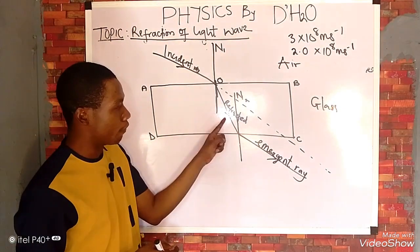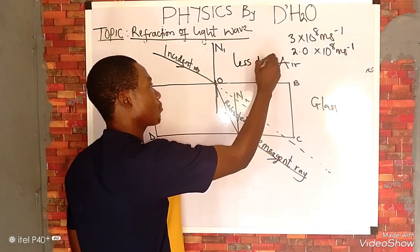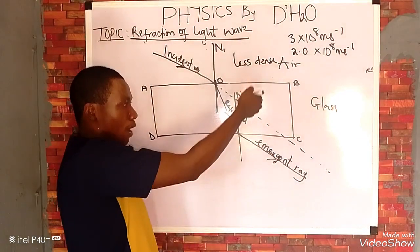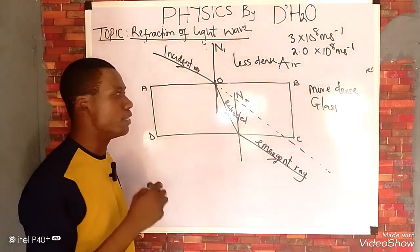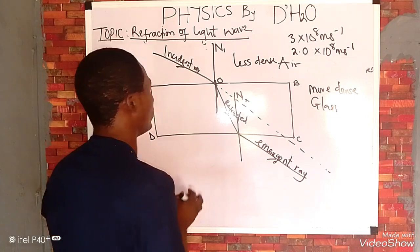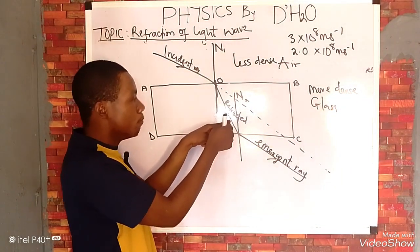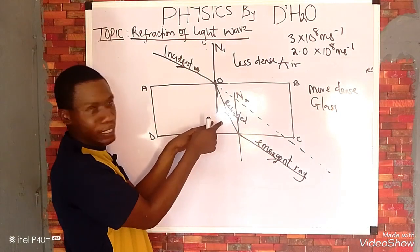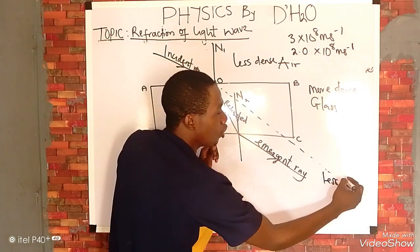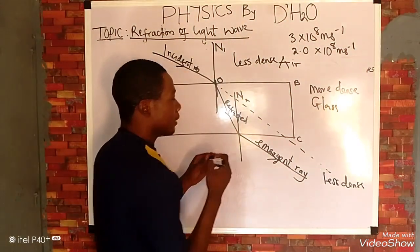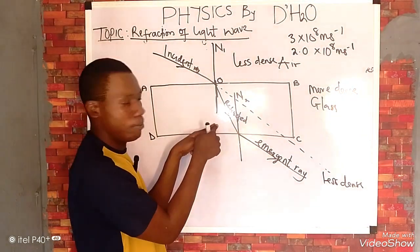Air is a less dense medium and glass is a more dense medium. When a light wave moves from a less dense medium to a more dense medium, the refracted ray bends towards the normal, as you can see in this diagram. But when it moves from a dense medium to a less dense medium, it will bend away from the normal.